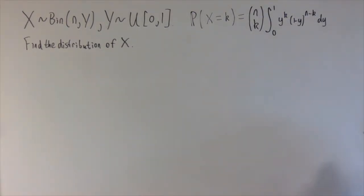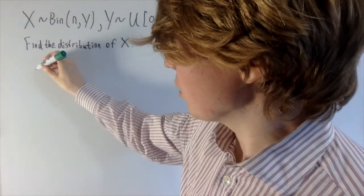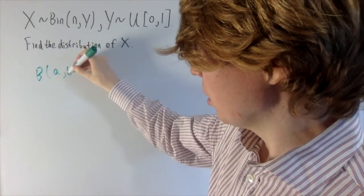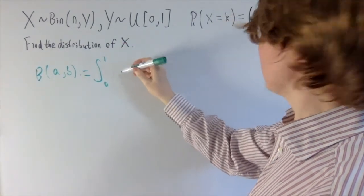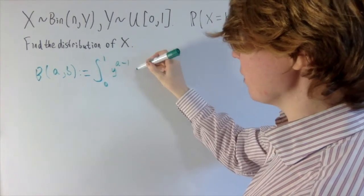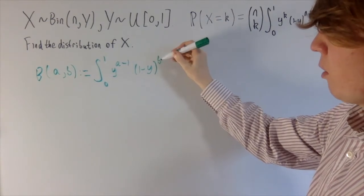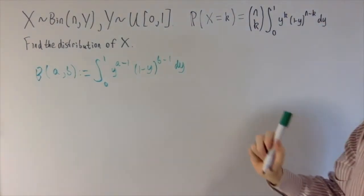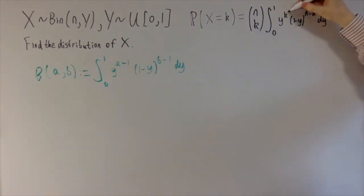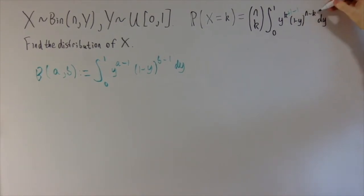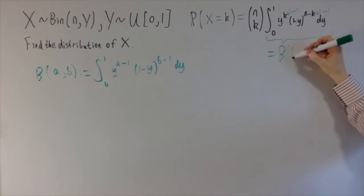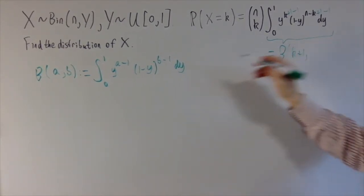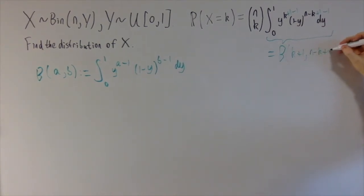This integral — y to the k times 1 minus y to the n minus k — is a very interesting special type of integral which gives rise to something called the beta function. The beta function B(a, b) is defined as the integral from 0 to 1 of y to the power a minus 1, multiplied by 1 minus y to the power b minus 1, dy. You can see our integrand is y to the k+1 minus 1 times 1 minus y to the n−k+1 minus 1, so the whole integral is the beta function B(k+1, n−k+1).